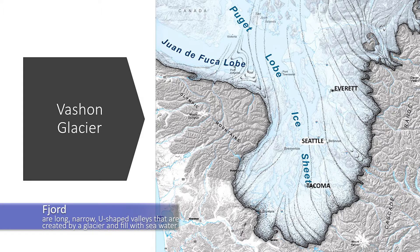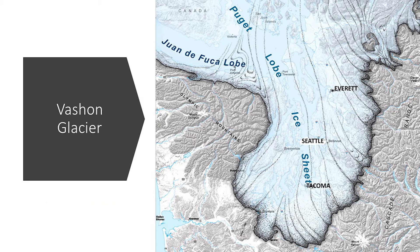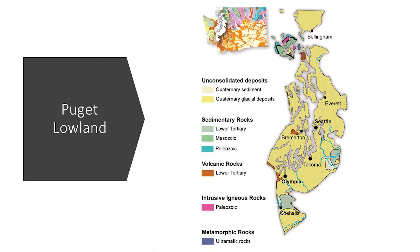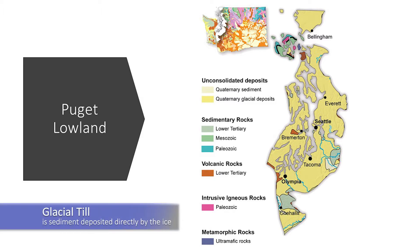Fjords are long, narrow, U-shaped valleys that fill with seawater and are a result of retreating glaciers. Two ice lobes covered the Puget Lowlands on the west side of the Cascade Mountains. The glacier was split into two around the Olympic Mountains. The Juan de Fuca lobe moved west and the Puget lobe moved south towards Seattle. The Puget lobe left deposits of clay, sand, soil, rock, and mud as it moved. Glacial till is sediment deposited directly by the ice, and outwash is sediment deposited by the meltwater in front of the glacier.